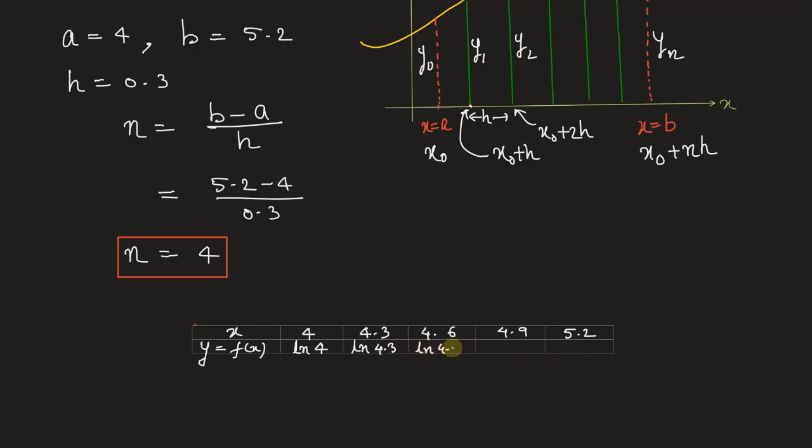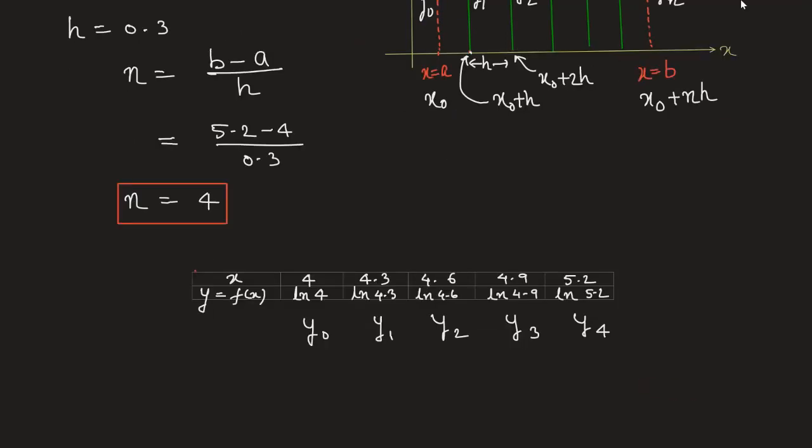The corresponding y values will be ln 4.6, ln 4.9, and ln 5.2. This is y₀, this is y₁, this is y₂, this value is y₃, and the final is y₄. Now we need to find the integral value using Simpson's one-third rule.